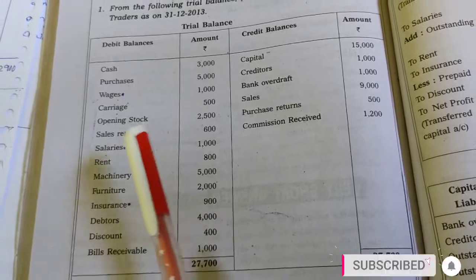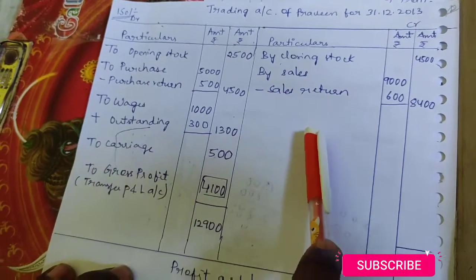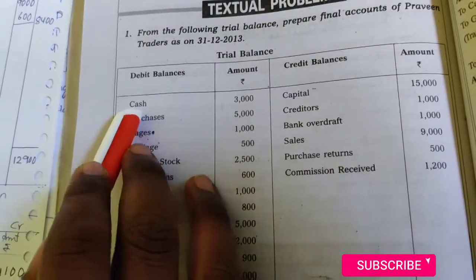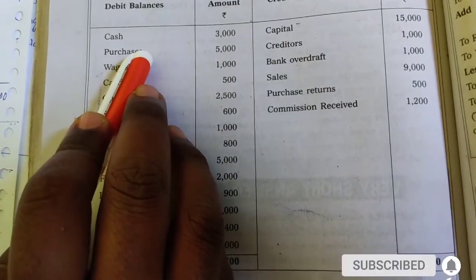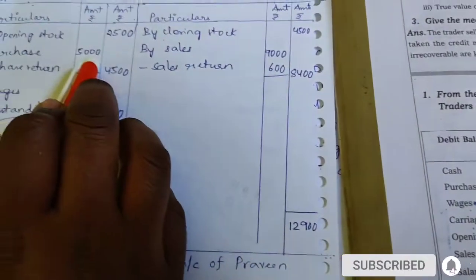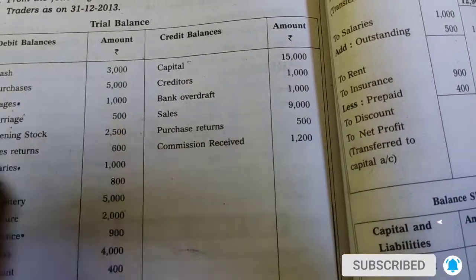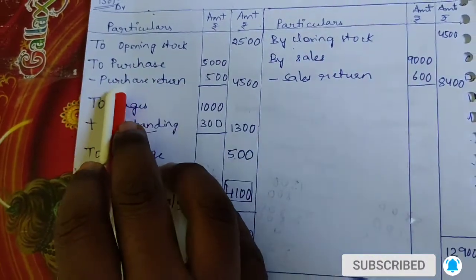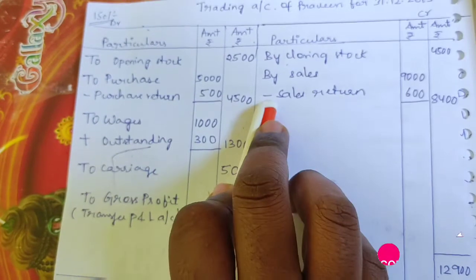Now let's see how to prepare the trading account format. Cash goes to the balance sheet. Purchases go to the trading account: purchases are 5,000. Purchase returns have also been given, so purchases returns are 500. Remember: if there are returns for purchases or sales, we always deduct them. So purchases minus purchase returns: 5,000 minus 500 equals 4,500.